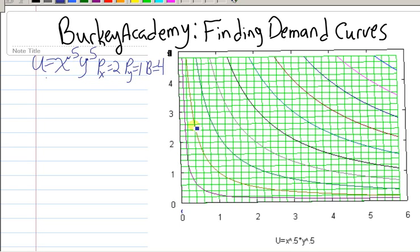Graphically I have our indifference curve map over here with indifference curves for 0.5, 1, 1.5, 2, 2.5, etc. utils here.